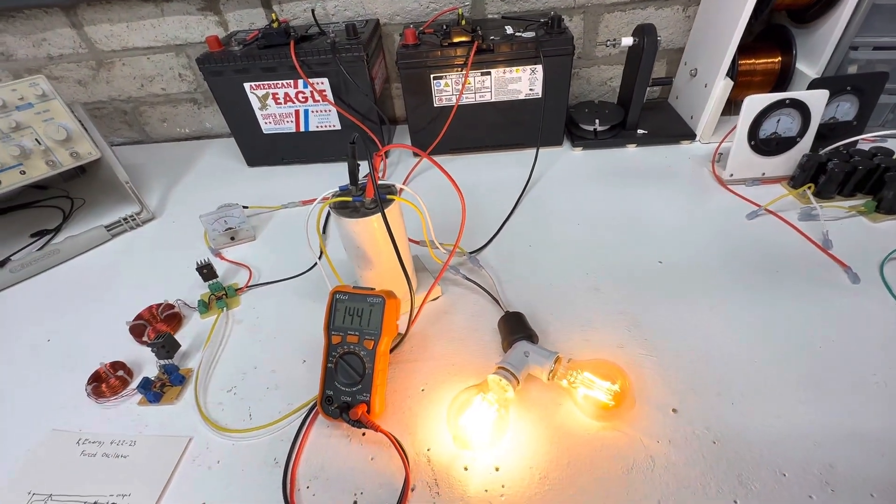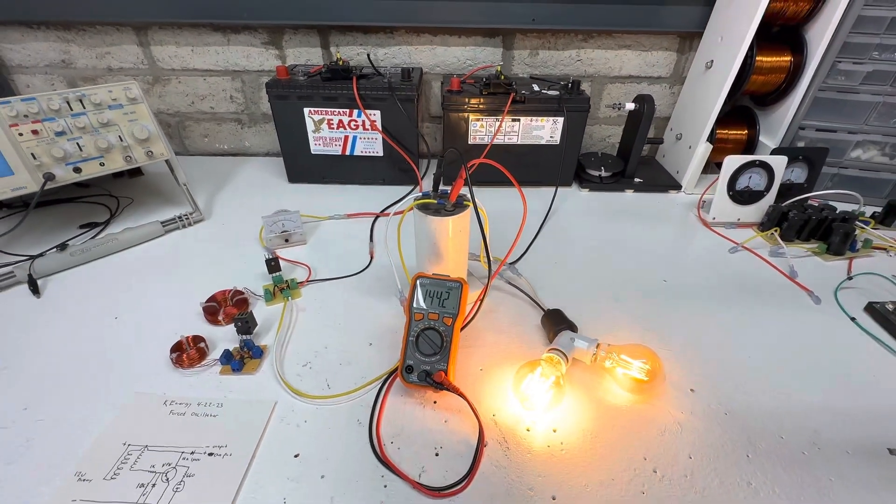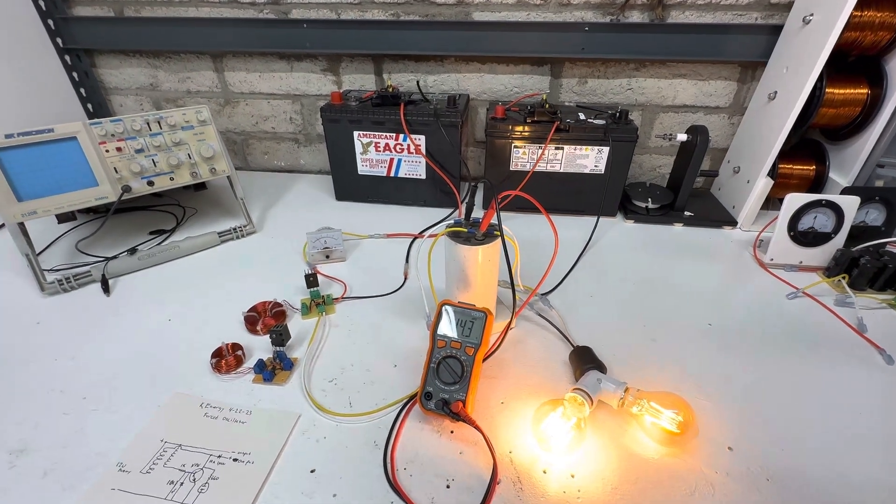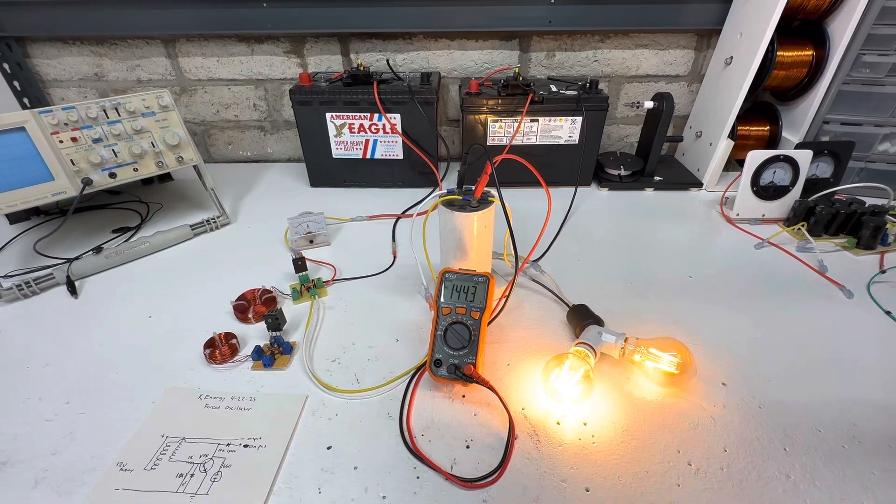On the previous video I showed 12 volt light bulbs that were LED as well, and the back charge to the battery, you know, a quarter of an amp while you're still running two light bulbs.